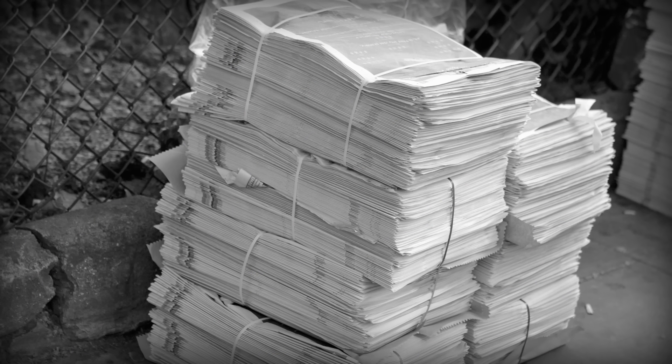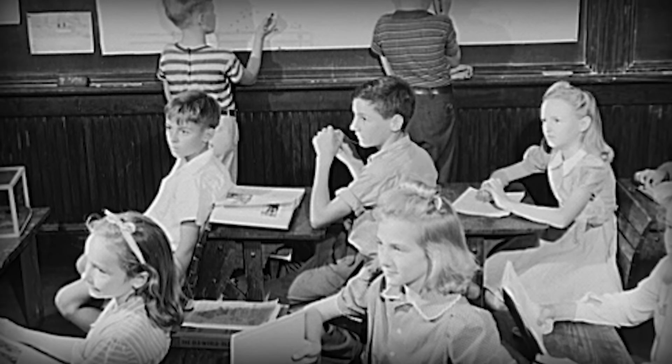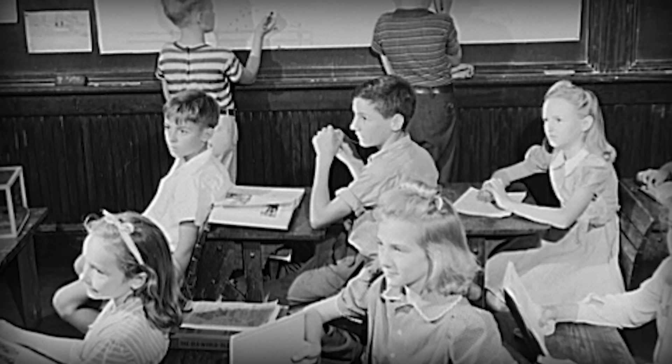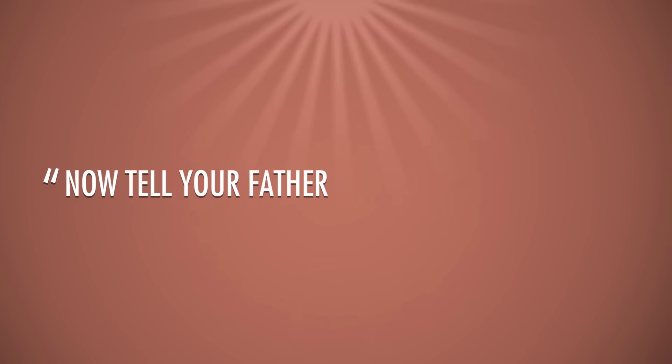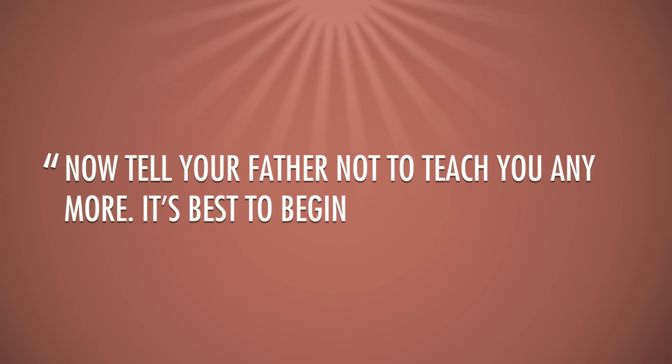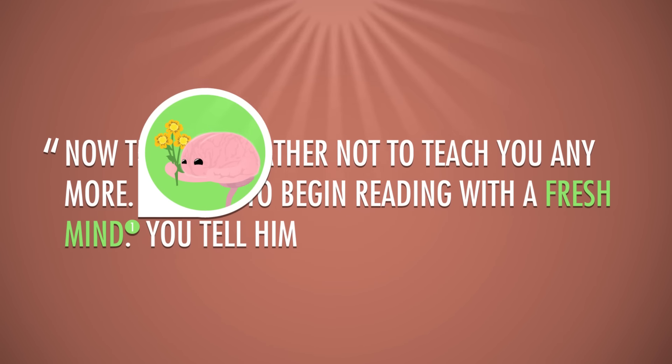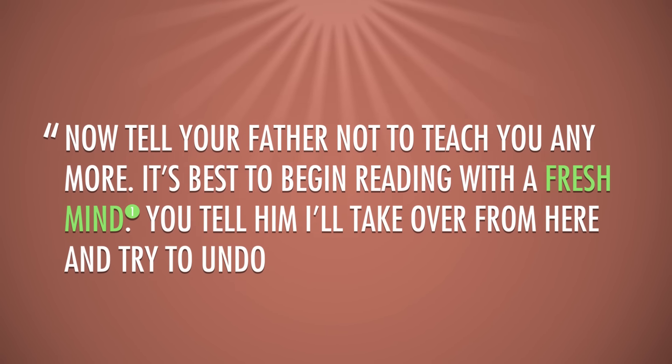So at the beginning of Mockingbird, a six-year-old Scout can already read the newspaper in spite of a lack of formal education. And when Scout demonstrates that she can read at school, Miss Caroline, a teacher with a loose grasp of John Dewey's philosophy, commands: Now tell your father not to teach you anymore. It's best to begin reading with a fresh mind. You tell him I'll take over from here and try to undo the damage. But of course, both academically and morally, Scout doesn't get her education in school. She gets it precisely from her father.